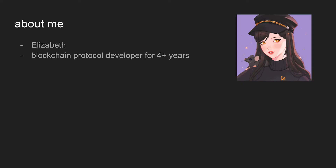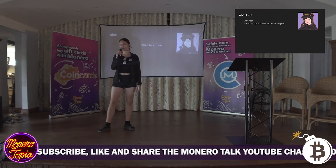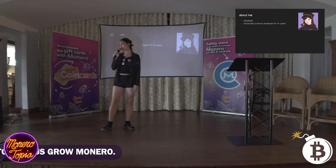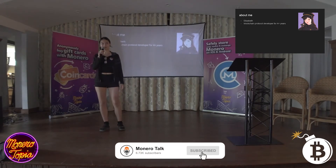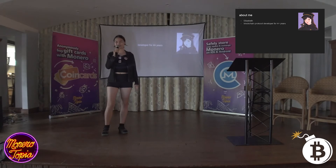A little bit about me: my name is Elizabeth, I've been a blockchain protocol-level developer for slightly over four years. I started on the Ethereum Solidity side and then worked on various blockchain node implementations — Polkadot, Cosmos, Ethermint, and the Filecoin Rust implementation. I've always had an interest in privacy; that's how I got into Monero. I did a project in my undergrad trying to add more privacy to Ethereum, basically throwing ring signatures onto Ethereum, but it didn't go anywhere because the block gas limit was too low.